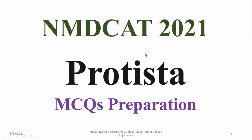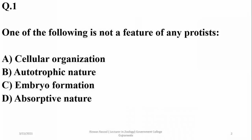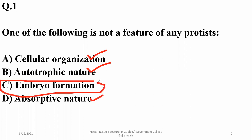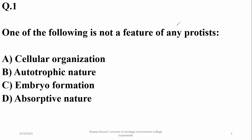In this portion we are going to have a discussion about Kingdom Protista and important MCQs related to it. Question number one: which of the following is not a feature of any protist? They have cellular organization, some are autotrophic and some are absorptive in nature, but embryo formation is not a characteristic of protists — that's why they are classified separately in Kingdom Protista. So option C is the right answer.